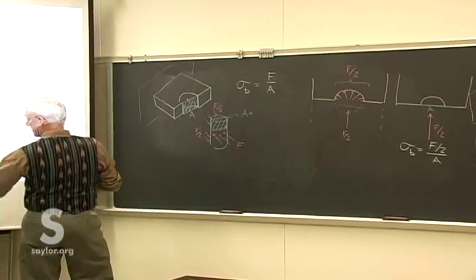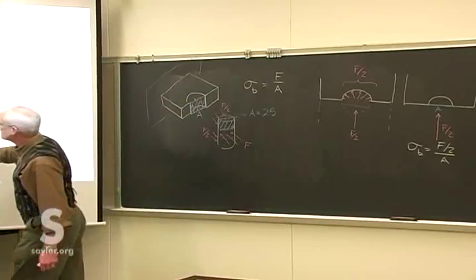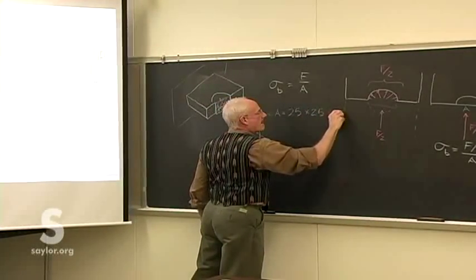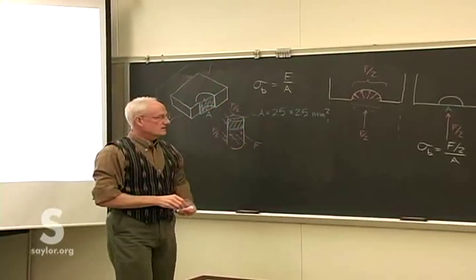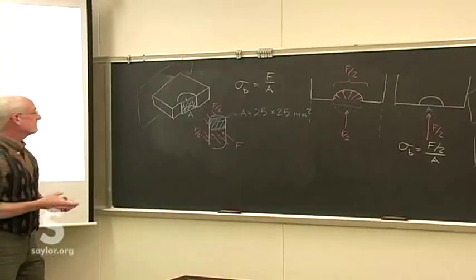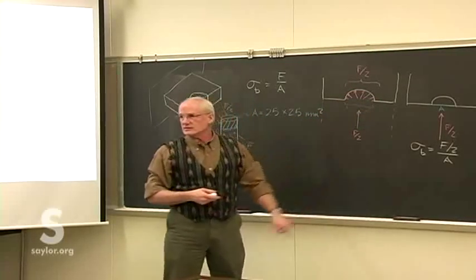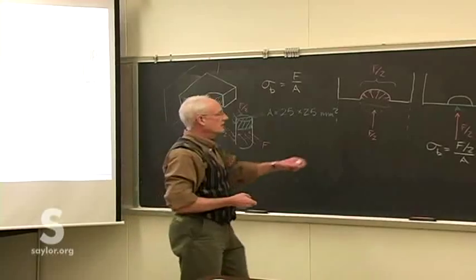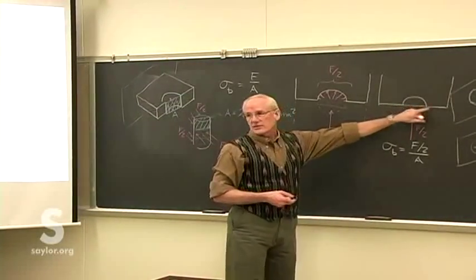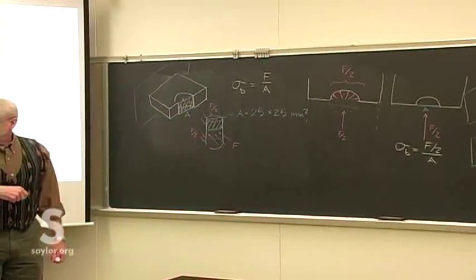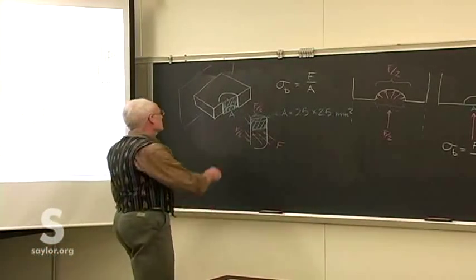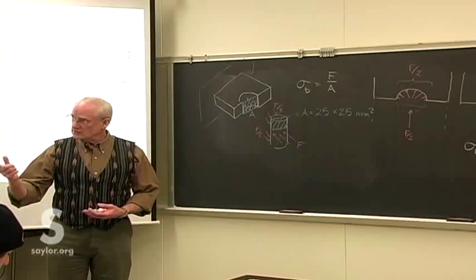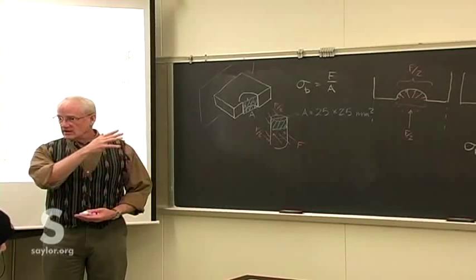The average bearing stress is F/2 over A, where A is the cross-sectional area — the diameter of the pin times the thickness of the bracket, which is 25 by 25 in this case. So you can take those known values and fairly simply figure out the bearing stress along a curved surface even without a uniform force distribution. It all integrates to just the total force over what's sometimes called an exposed area — the same thing done in fluid statics when finding pressure force on an inclined surface.